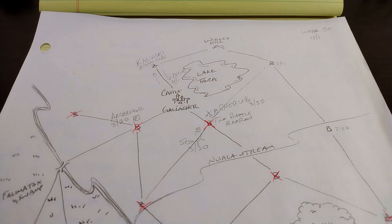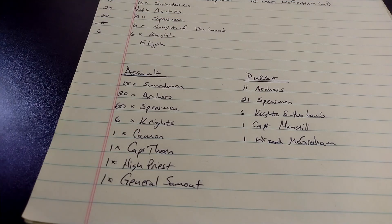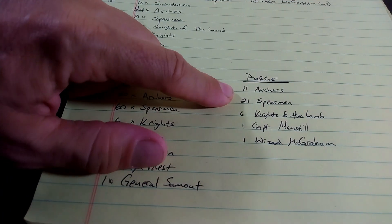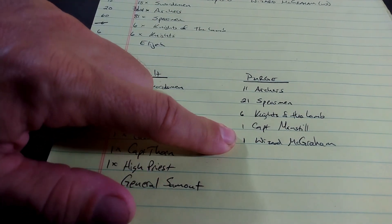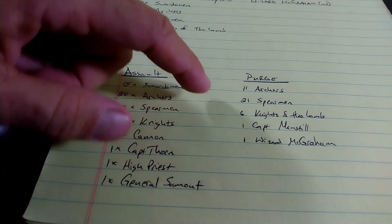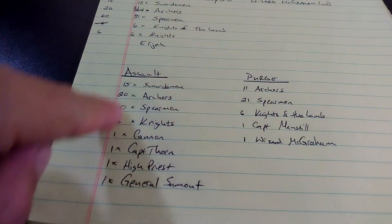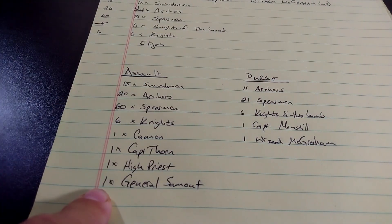What that means is we can break our Broman force into two forces, 11 archers, 20 spearmen, 21 actually, six knights of the lamb, Captain Manstill, and the wizard Magram. These guys are all going to go run that circuit where these guys will participate in the assault.